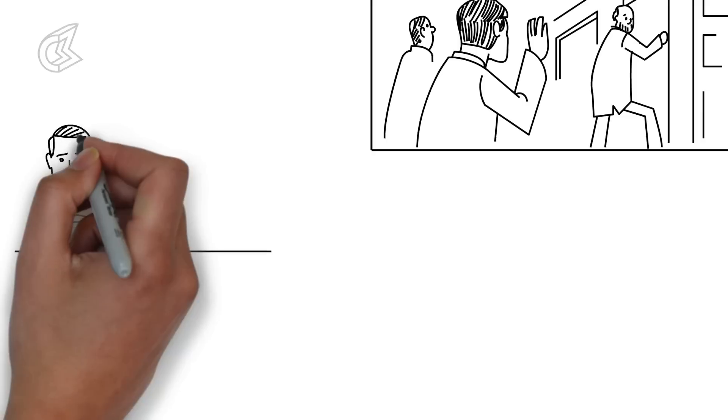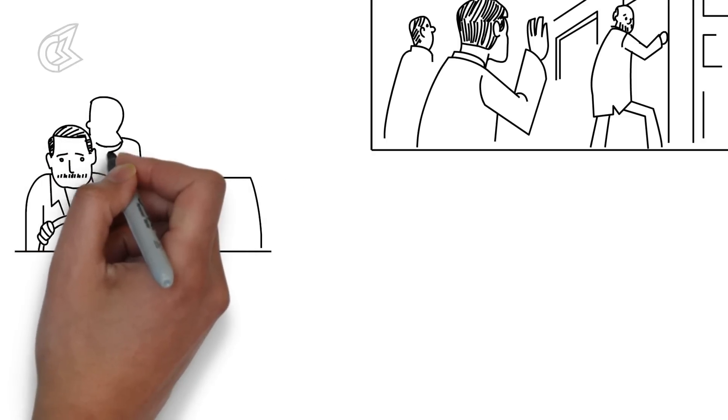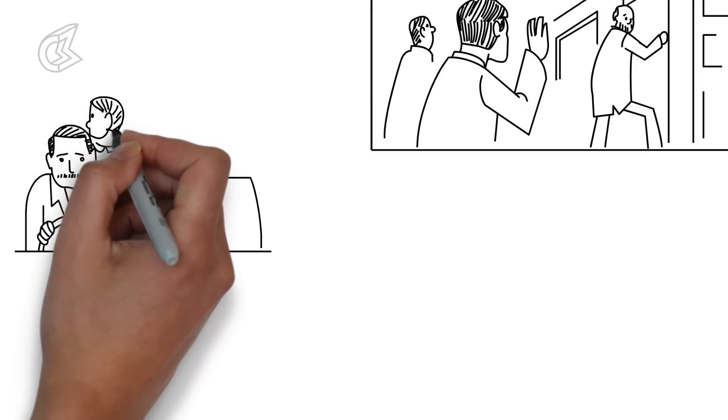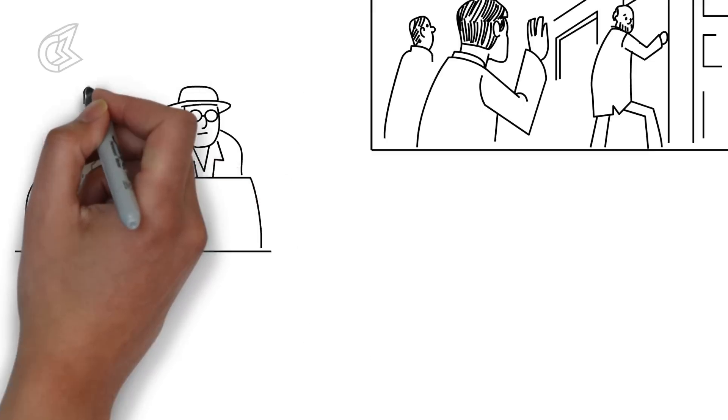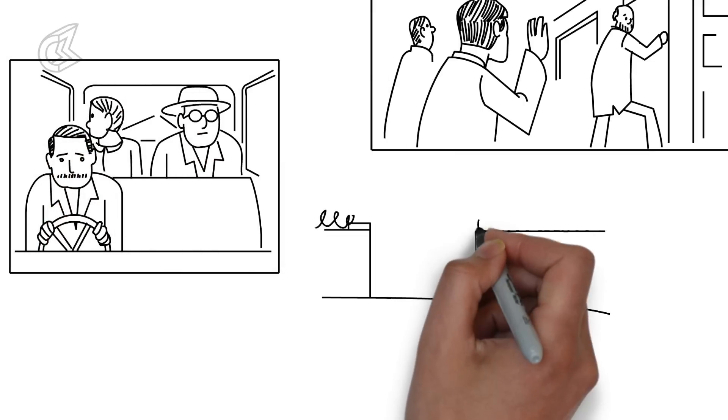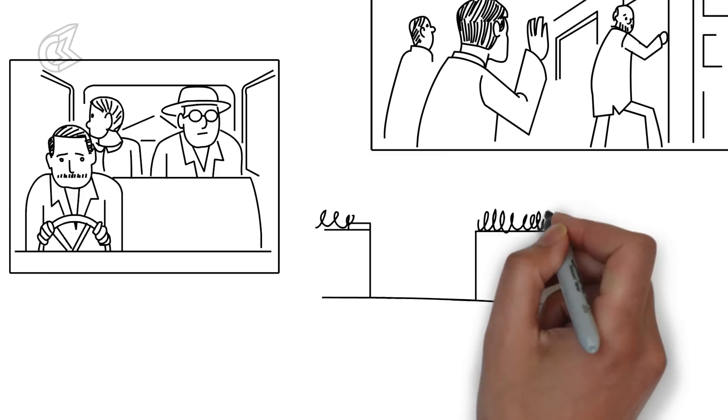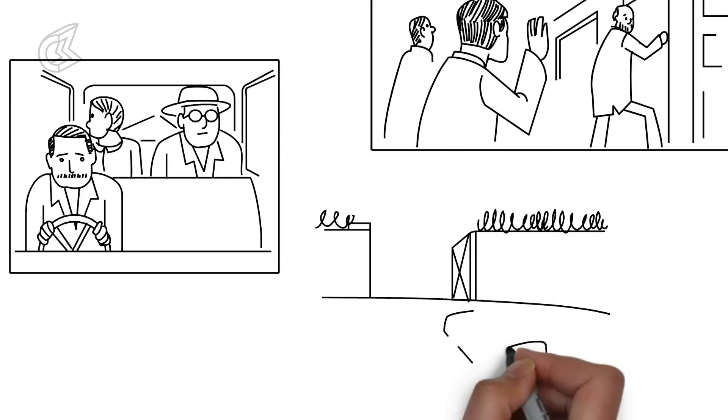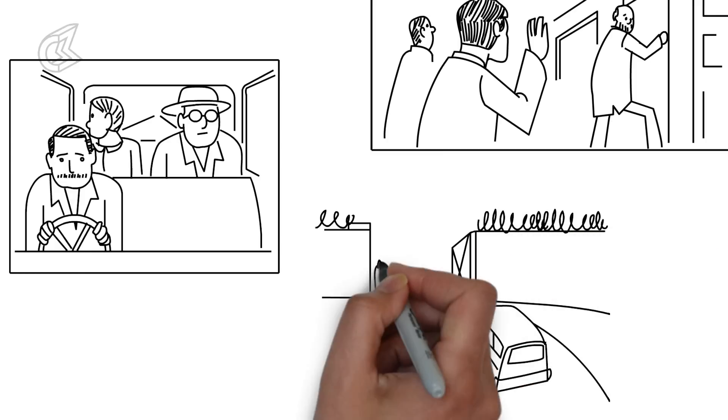But Subhash Chandra Bose is now carrying a new identity. That of an Italian named Orlando Mozata. Accompanied by a German, Dr. Vela from Kabul. They drive to the Russian frontier and successfully enter Russian territory.